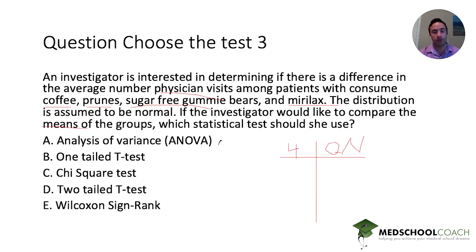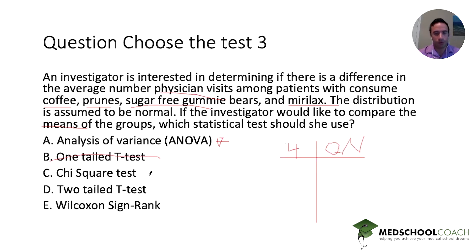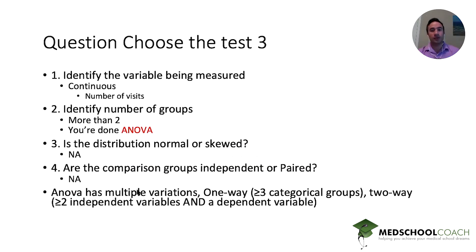The ANOVA test is for greater than or equal to three groups with quantitative data — that looks good. The t-test is for two groups. The chi-squared test is for qualitative or categorical data — out. The two-tailed t-test is for two groups — out. The Wilcoxon signed-rank test is also two groups — out. So we've arrived at the ANOVA test: continuous data, more than two groups. We don't need to go further on skew or pairing. ANOVA does have multiple variations — one-way and two-way — which we'll address in the next question.